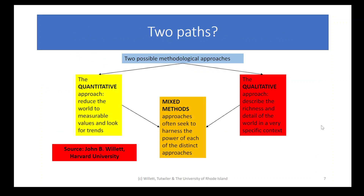There are a couple of different methodological approaches you can take — technically two big ones and then one combination. There's the quantitative approach in which we reduce the world to measurable values and look for trends; this is where a lot of statistics and numbers come in. The qualitative approach describes the richness and detail of the world in a very specific context — no statistics, usually written descriptions about what's happening. And then the mixed methods approach is really a combination of the two, putting together the power of both.